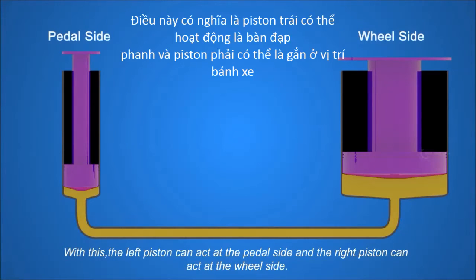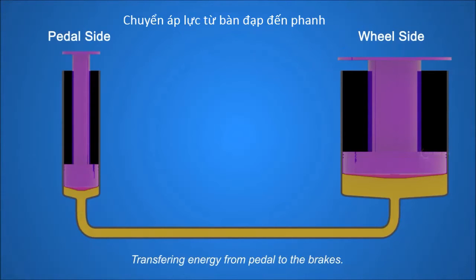With this, provided A2 is greater than A1, the left piston can act at the pedal side and the right piston can act at the wheel side, transferring energy from the pedal to the brakes.